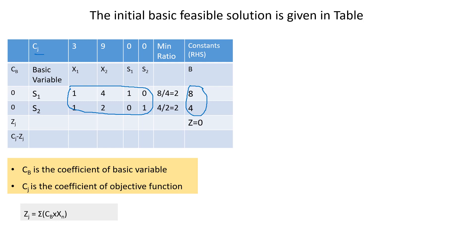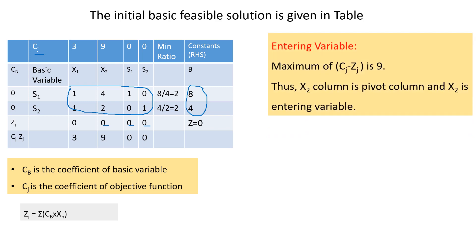To calculate zj, we use the formula: summation of cb times the column values. Since cb is 0 for both basic variables, all zj values equal 0. Then we calculate cj minus zj: 3 minus 0 = 3 for x1, 9 minus 0 = 9 for x2, and 0 for both slack variables. Now to determine the entering variable, we select the maximum positive cj minus zj value, which is 9.